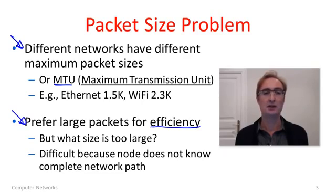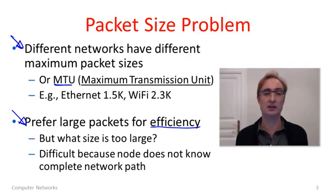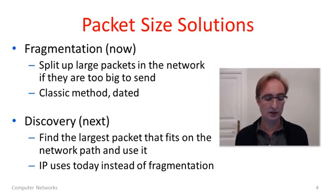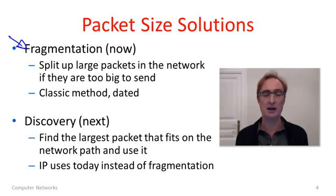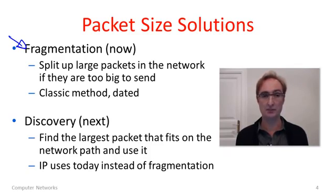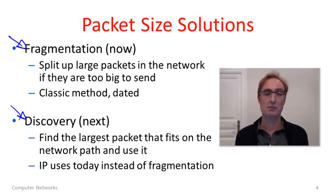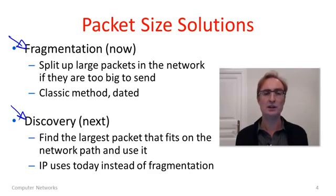This is difficult to work out because a host on the network knows how big packets it can send through the link to which it's attached, but it doesn't know what size packets will fit somewhere way on the other side of the network. There are two different kinds of solutions. One is fragmentation — splitting a large packet into smaller pieces. This is the classic IP method, somewhat dated and now deprecated. The other is a discovery method, where hosts find ahead of time the largest packet which will fit through the network, and can simply use that size to avoid unnecessary fragmentation.